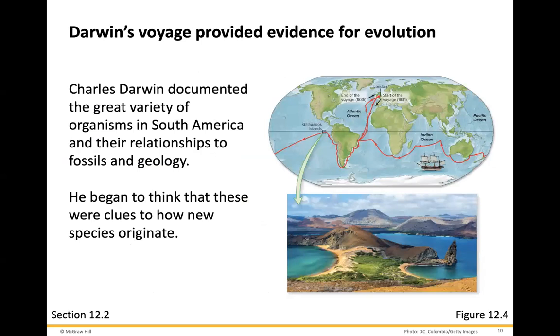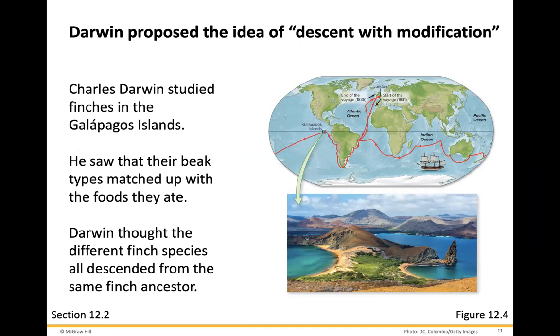As Darwin's voyage provided evidence for evolution, Charles Darwin documented the great variety of organisms in South America and their relationships to fossils and geology. He began to think that these were clues to how new species originate. Charles Darwin studied finches in the Galapagos Islands and saw that their beak types matched up with the foods that they ate.